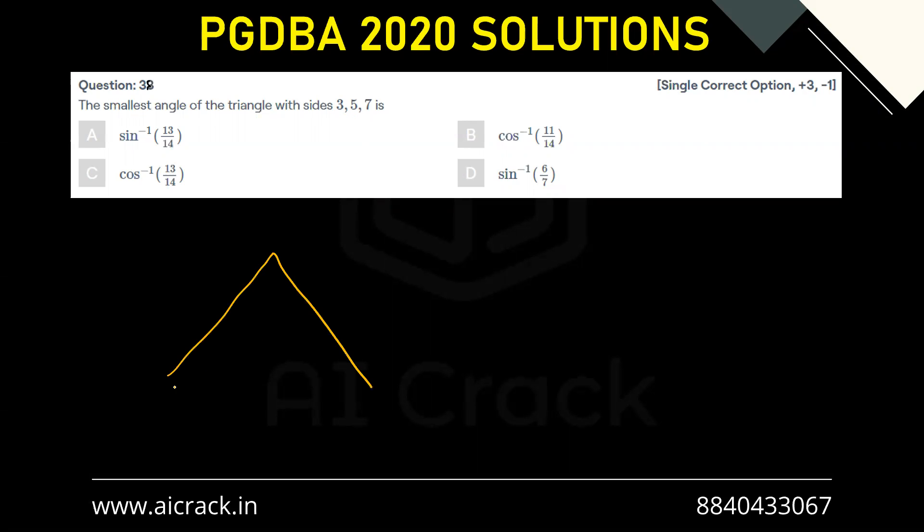So we have this triangle. Let's say A, B, C, and this is A, this is C, this is B. This is how the standard notation is. So let's say A equals 3, B equals 5, and C equals 7, right?